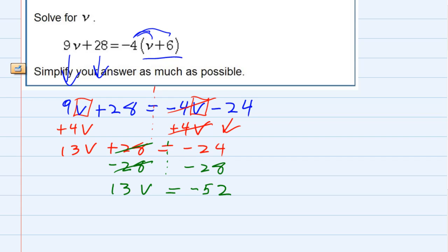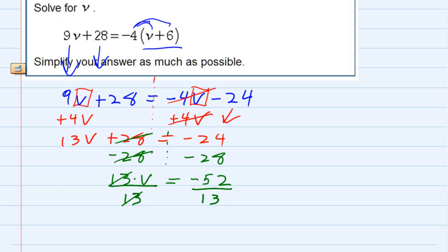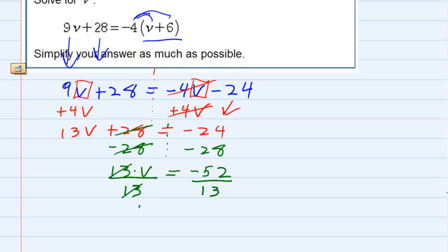So the last step is to get the v by itself. Undo multiplication with division. So I want to divide by 13, I have to do it to both sides. Divide by 13. On the left those cancel, giving me just v.